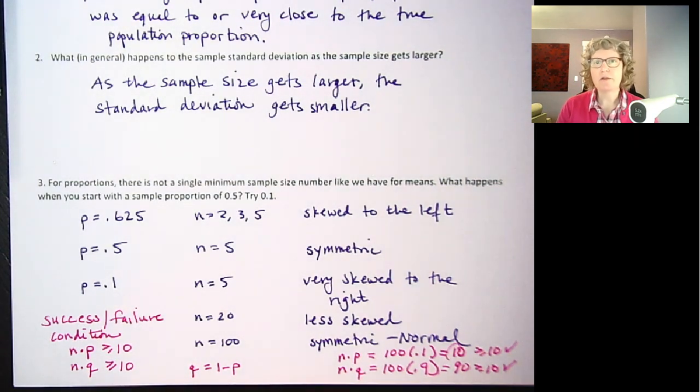Okay? So that's a summary of our sampling distribution for a yes-no categorical variable, sample proportion. And on the next page, we will look at the properties and we'll do some examples. Okay? I'll see you in the next video. Okay, bye-bye.